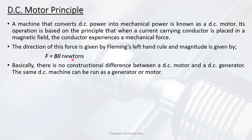Basically, there is no construction difference between a DC motor and a DC generator — they are the same machine. A generator item runs into the motor item.